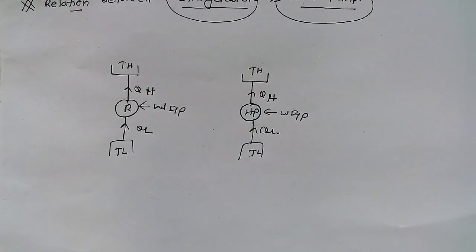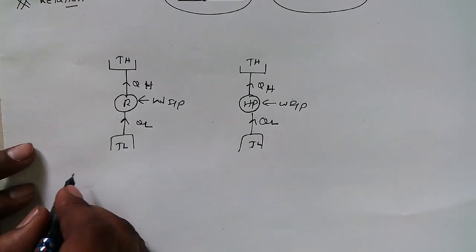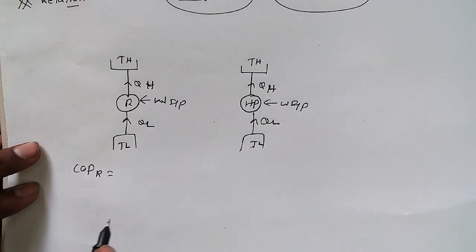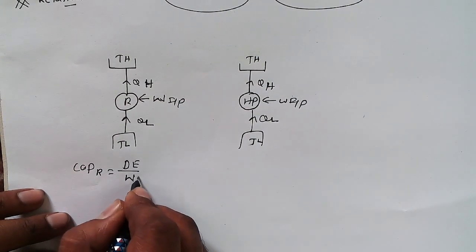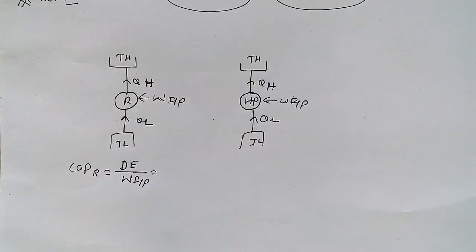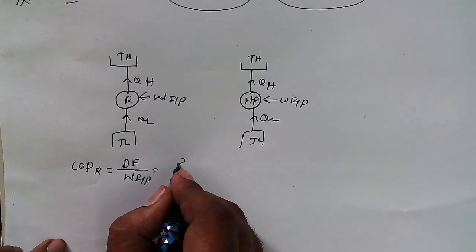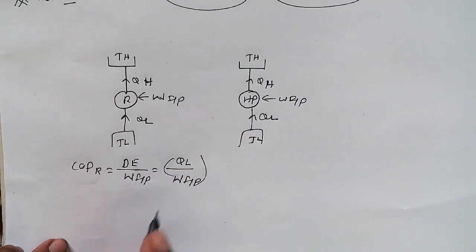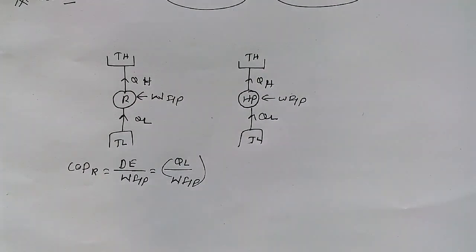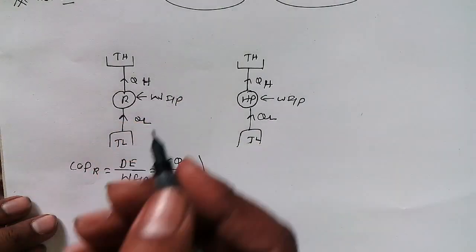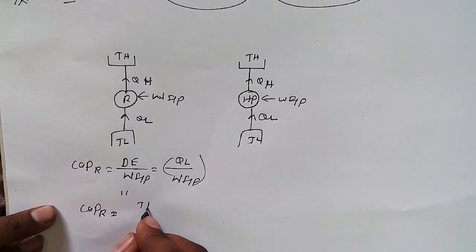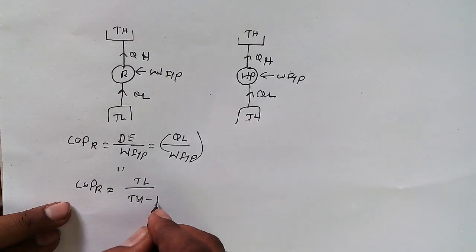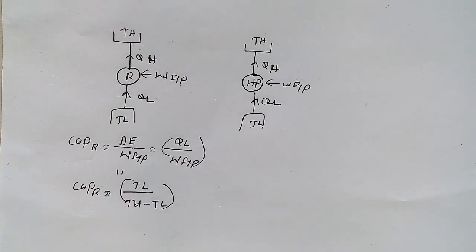Now we will see the COP — coefficient of performance — for a refrigerator. COP is always the desired effect upon work input. What is the desired effect for a refrigerator? That is QL upon work input. In terms of temperature, COP of refrigerator is equal to TL divided by TH minus TL.